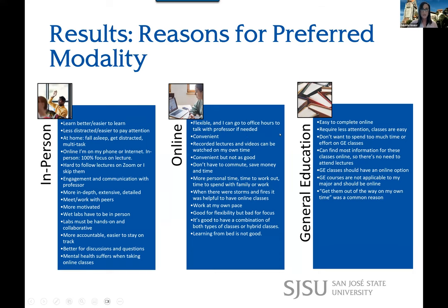For online preferences, just like Kelly's comments: flexibility was key. Students said they can go to office hours if they want to see the professor in-person. They liked recorded lectures that could be watched on their own time, for either asynchronous classes or recorded Zoom lectures — that came up quite a bit. Convenience, not having to commute, more personal time — time to work out, time to spend with family or work. Some noted it's good for flexibility but bad for focus, and convenient but not as good for learning. Learning from bed is not good was a common sentiment.